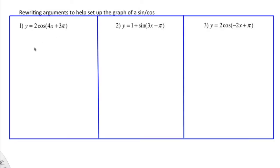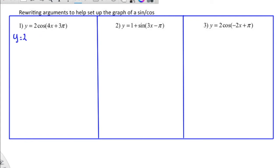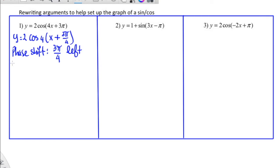Let's look at some rewriting examples to see what really happens. On the inside, we want to take the 4 out — simple factoring — so that becomes 4(x + 3 pi over 4). That gives me two things: I know now the phase shift is 3 pi over 4. Since it's positive, that actually means it's going to be 3 pi over 4 to the left. I also know that the period will be 2 pi divided by 4, which is pi over 2. So this function will go 3 pi over 4 left, the start of the table will be at negative 3 pi over 4, and when you add the period (2 pi over 4) you'll still be at negative pi over 4 — so the whole sine is graphed to the left of the y-axis.